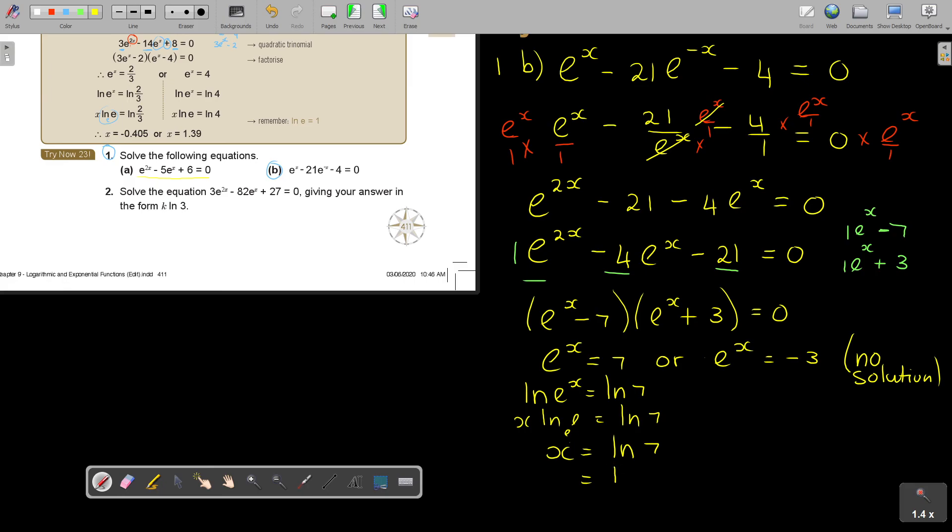But otherwise, it's 1.94. 9, 4. No, there's a 5 after, so 1.95. Because that, it was actually, can I just show you? It was 1.9459, so that 5 makes that a 5. And that is correct to three significant figures. That's how you do it.